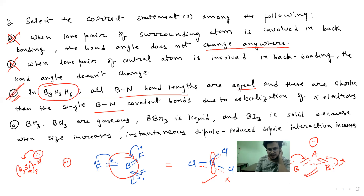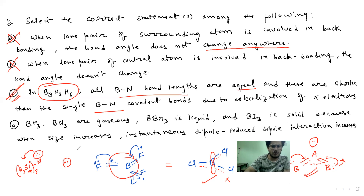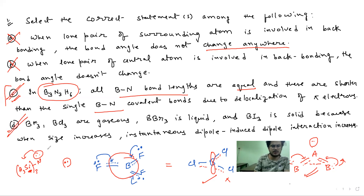BF3 and BCl3 are gaseous, BBr3 is liquid, and BI3 is solid. Yes, this is a correct fact. The reason is van der Waals forces — instantaneous dipole-induced dipole interactions. These forces increase with increasing size of the side atom. Therefore, it is quite obvious that there will be changes in state: BF3 and BCl3 gaseous, BBr3 liquid, and BI3 solid. So these two options — C and D — are correct.